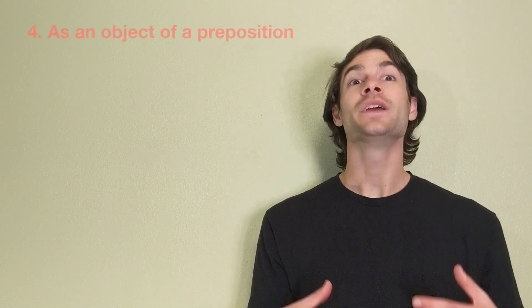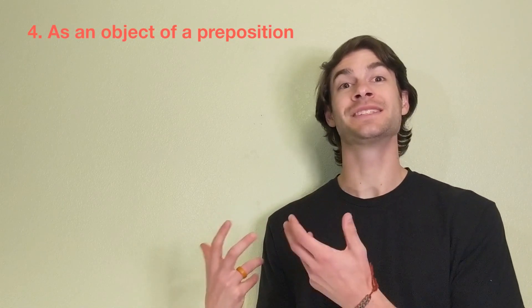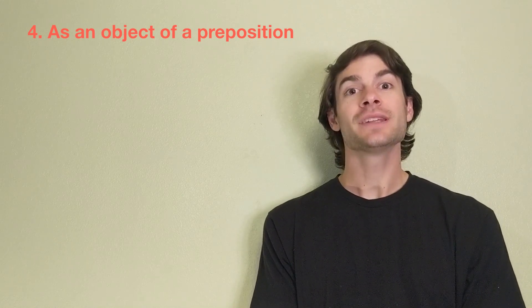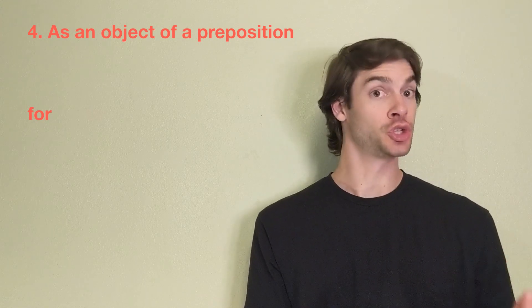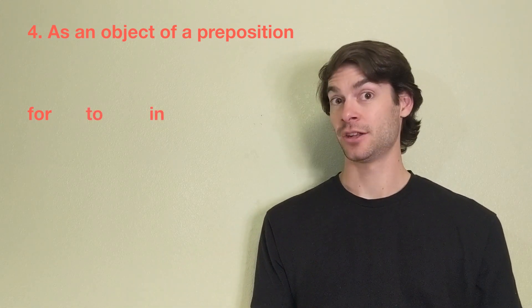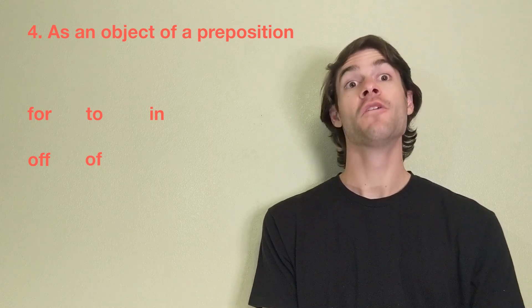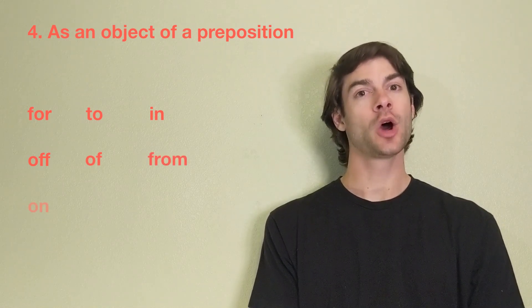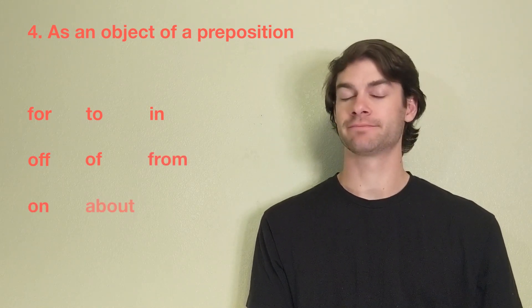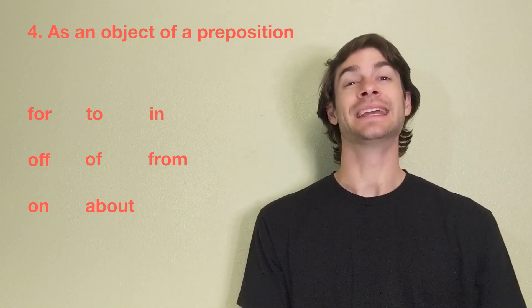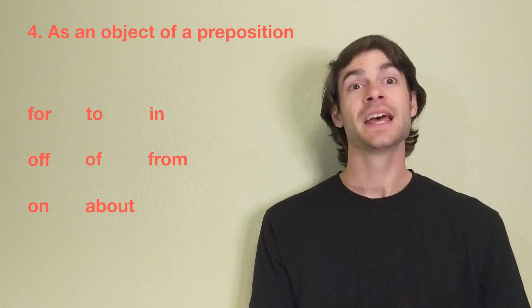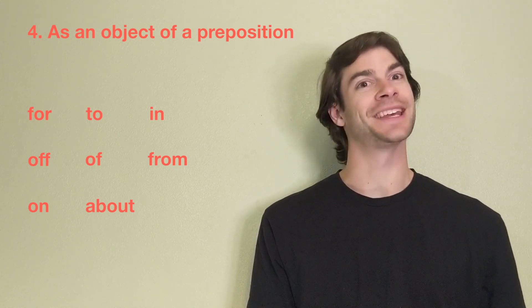The last and fourth way that we can use gerunds is as an object of a preposition. A gerund can follow prepositions, such as for, to, in, off, of, from, on, or about. There are more examples of prepositions that a gerund can be an object of, but these are some common examples.